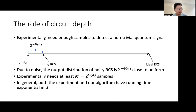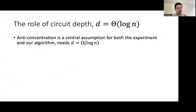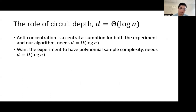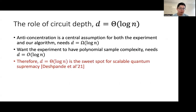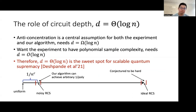However, there is a very specifically interesting regime of Θ(log n) depths. Recall that we have the anti-concentration property, which is a central assumption for both the experiment and our algorithm, and that means at least log n depth. On the other hand, we also want the experiment to have polynomial sample complexity, which means circuit depth can be at most O(log n). Therefore, Θ(log n) depth is the sweet spot for scalable quantum supremacy, because in this regime the experiment satisfies anti-concentration and also has polynomial sample complexity. And in this very interesting regime, both the experiment and our algorithm have polynomial running time.